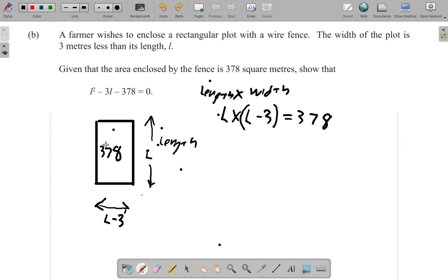So now L times L gives you L squared minus L times 3 gives you 3L is equal to 378. And if you subtract 378 from both sides, you get L squared minus 3L minus 378 equals 0.